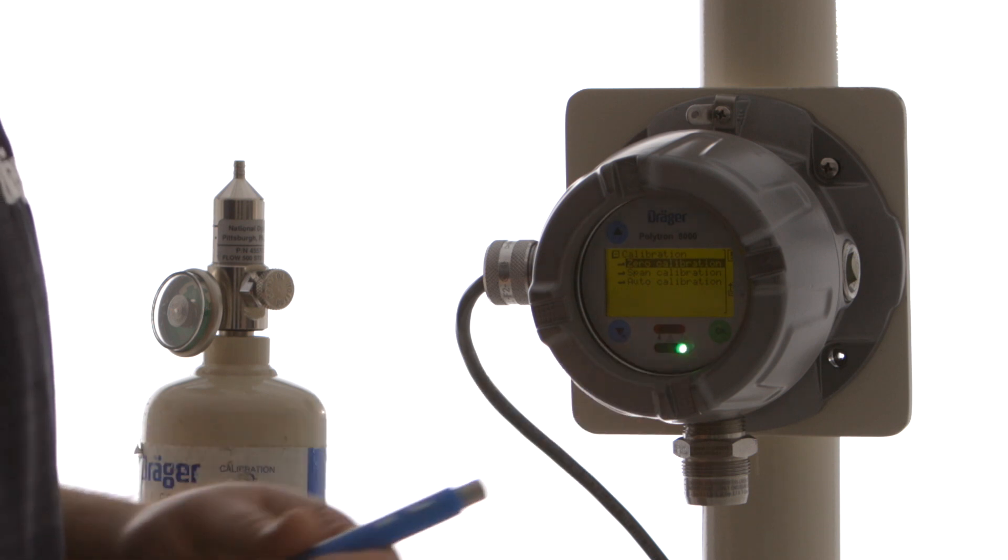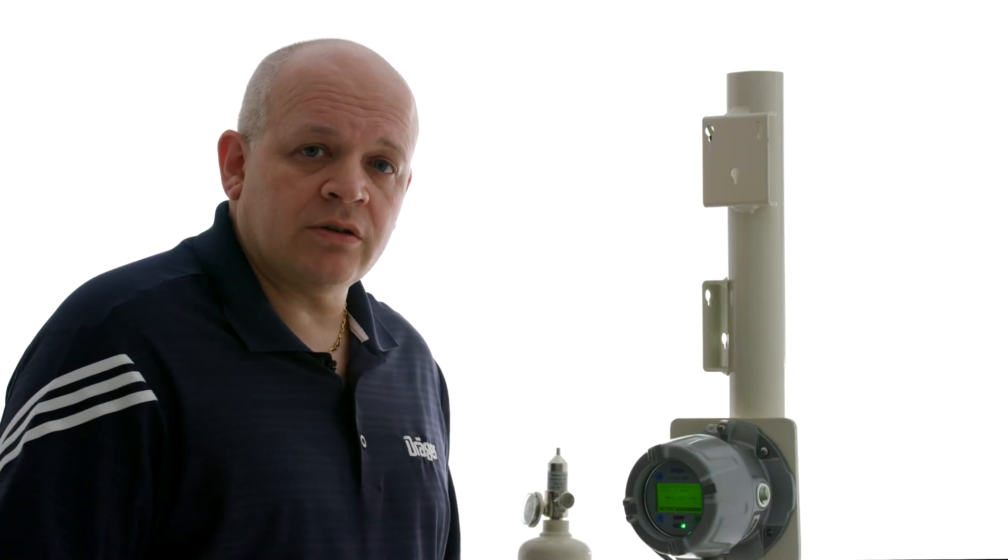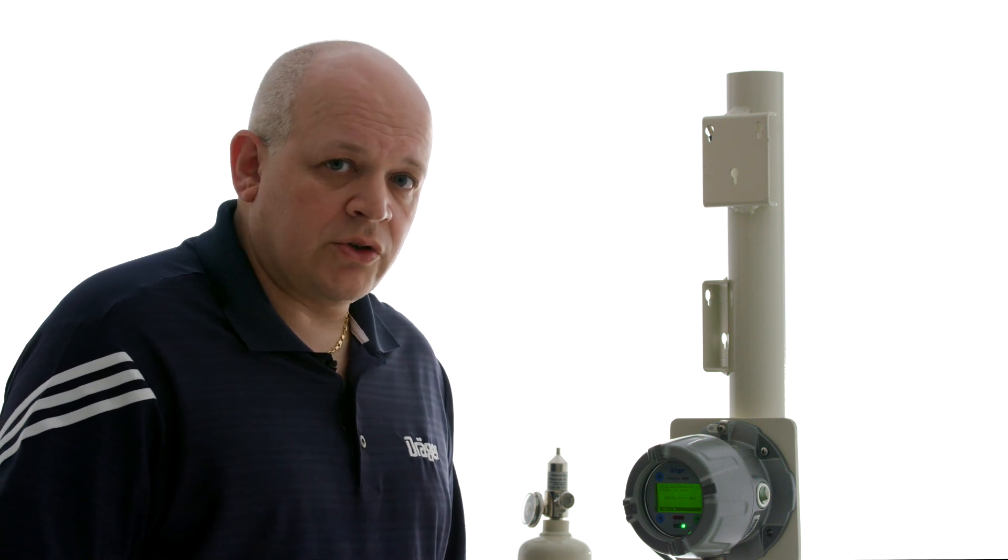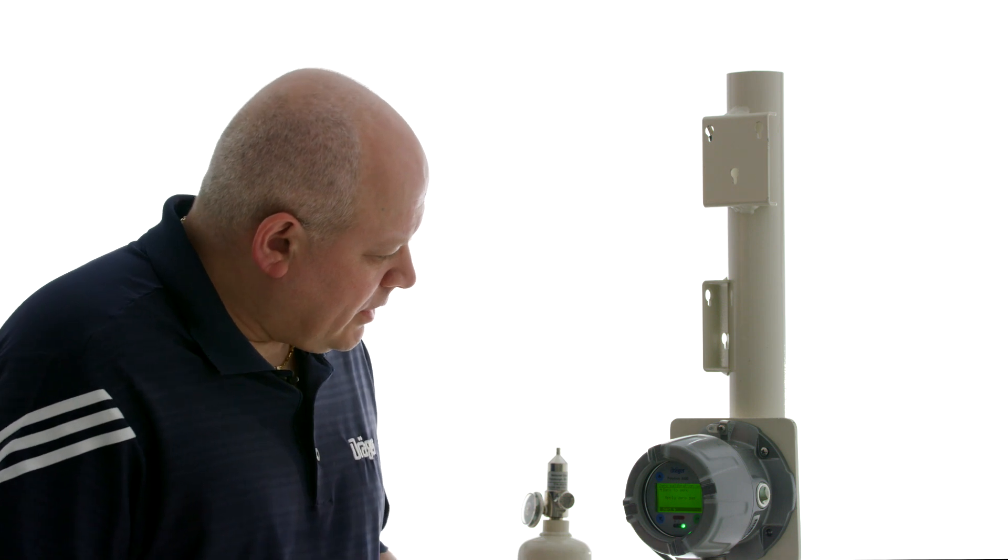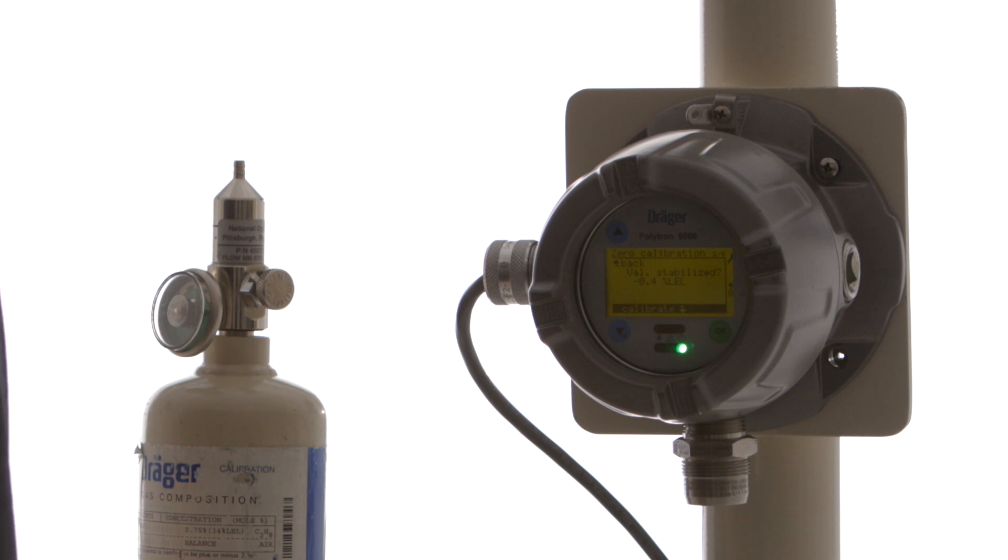We're going to do our zero first. If you are doing a zero calibration with fresh air, just make sure the ambient air does not contain any cross-sensitive gases or the gas that you're trying to measure. So we're going to apply zero gas. There's nothing to apply since we're in fresh air. We're going to select OK.